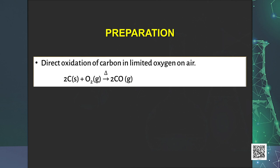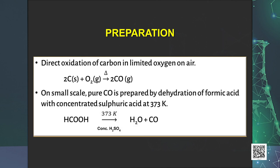On small scale, pure CO is prepared by dehydration of formic acid with concentrated sulfuric acid at 373 Kelvin. The reaction can be expressed as HCOOH giving H2O plus CO at 373 Kelvin and concentrated H2SO4.